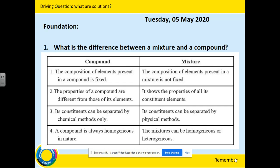Number two: the properties of a compound are different to those of its elements. Remember in our last lesson we looked at sodium chloride — which is salt — versus using sodium and chlorine by themselves. Once two elements have combined together, they lose some of their original and individual properties. For a mixture, it shows the properties of all its constituent elements — if you were able to separate the elements, the different particles will retain their original properties.